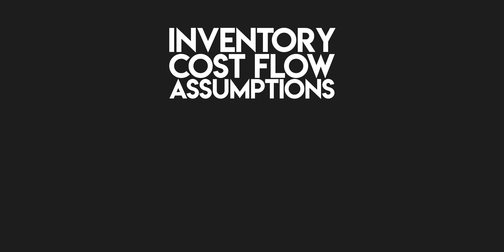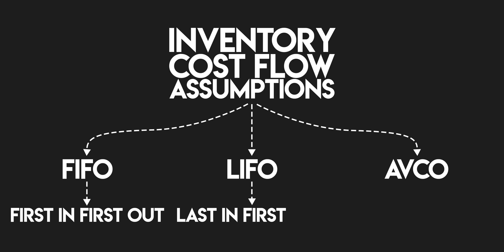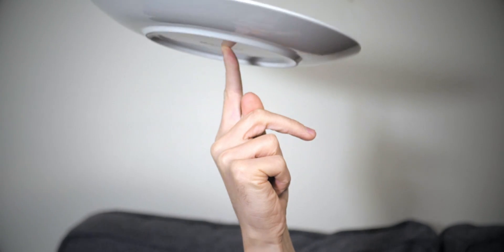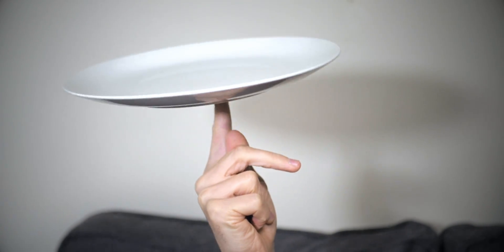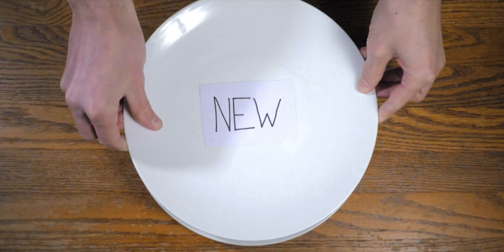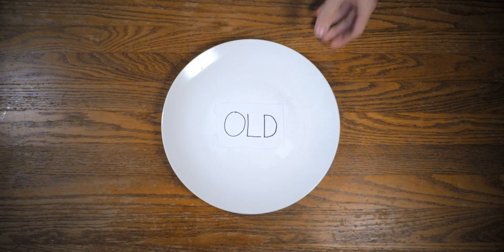There are three cost flow assumptions: FIFO, LIFO, and Avco — first in first out, last in first out, and the average cost method. In this video we're going to cover LIFO. When you make a sale using the LIFO method, you make the assumption that your newest inventory will be sold first. Last to come in, first to go out.